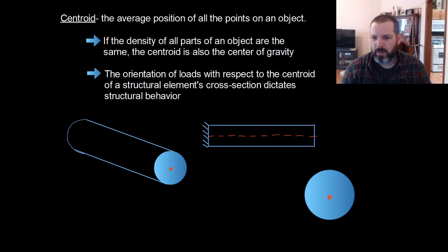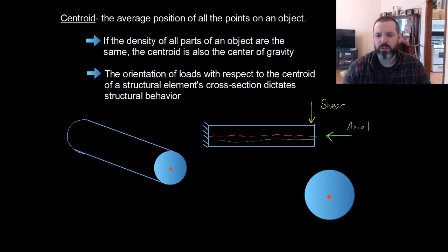Now, if I apply a force directly onto that centroid, we call this force an axial load, and it will produce only axial force. Axial force occurs along the centroid of any member. If I apply a force at any other position, like at 90 degrees to the centroid, a force at 90 degrees to the centroid is called a shear force, and this shear force will also result in a moment.